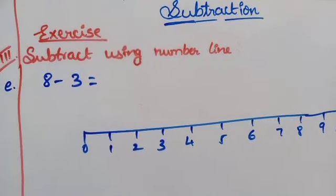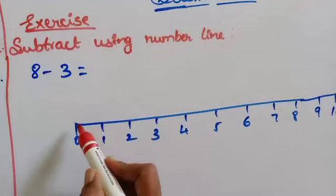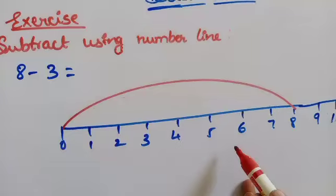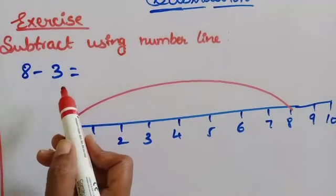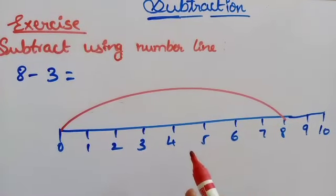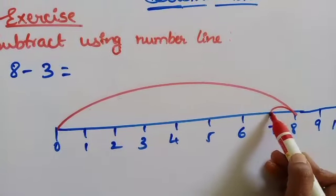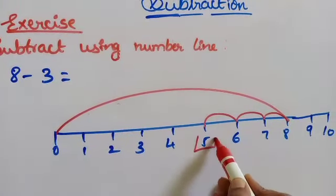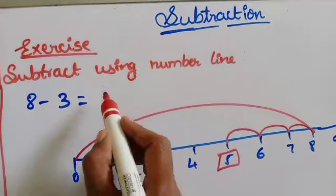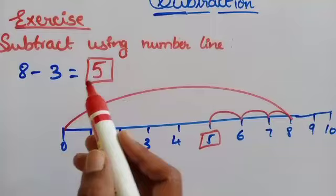The 5th one is 8 minus 3. From 0 we jump directly to 8. The next number is 3, so from 8 we count back 3 steps backward: 1, 2, 3. The answer is 5. So 8 minus 3 is equal to 5.